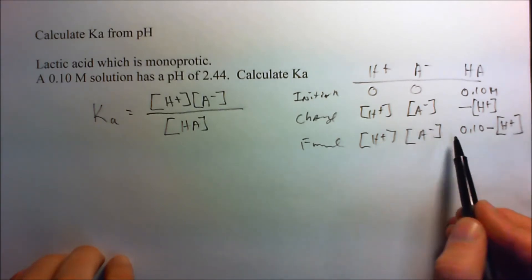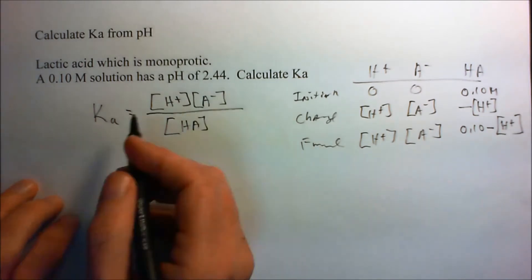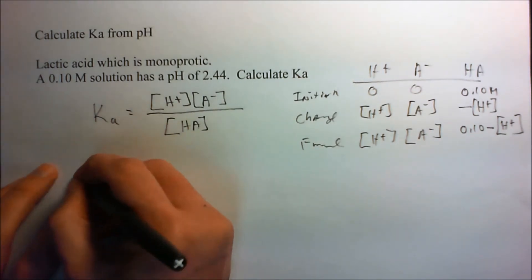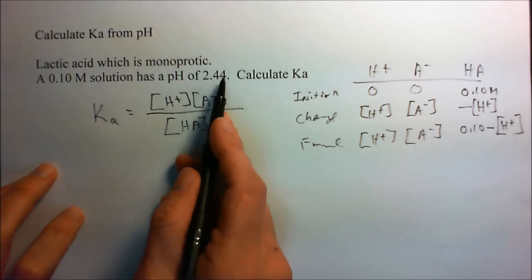And if we can ignore it, we just need to put in these final concentrations. So, why don't we go ahead and get the H plus and the A minus first. To get the concentration, we take 10 to the minus of the pH.